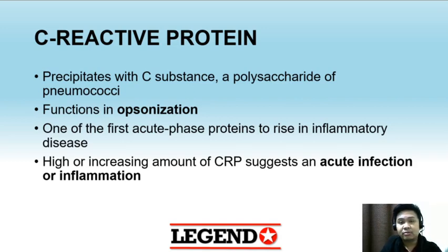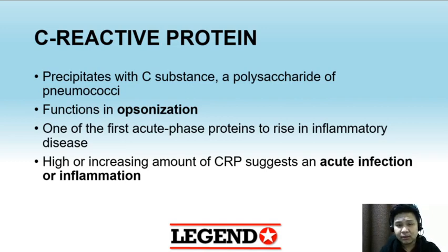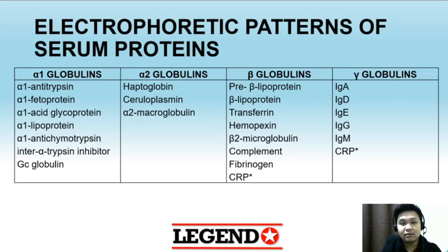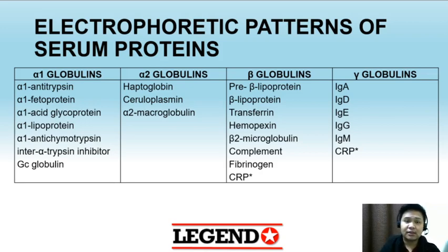Those are the diagnostically significant proteins that you need to remember. There are still more diagnostically significant proteins, but the ones discussed here are the ones usually asked in exams. You also need to know the electrophoretic pattern of each serum protein — who migrates to the alpha-1, alpha-2, beta, and gamma regions. If you find this lecture helpful, like this video, leave a comment below, and please subscribe to our channel. Thank you.